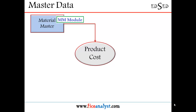The material master has got many, many views. For example, the accounting views and production planning views like MRP view 1, 2, 3, and 4. All these views will play a role in product cost estimation.